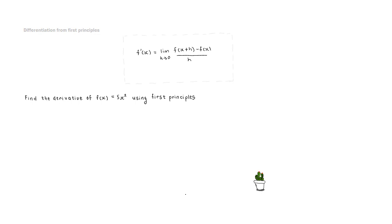Let's jump straight into examples. The instruction for all these examples is going to be the same: we are finding the derivative of a given equation using first principles. In the first example we have a simple parabola, f of x equals 5x squared.